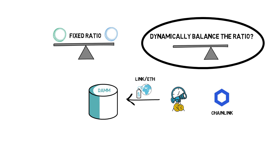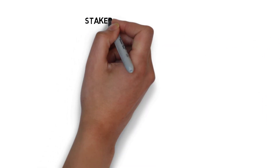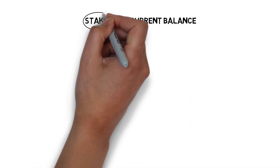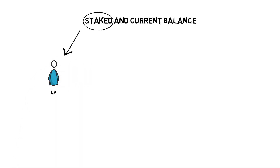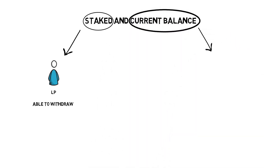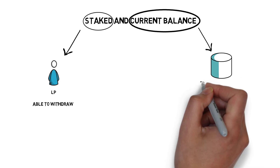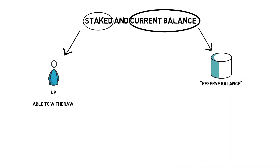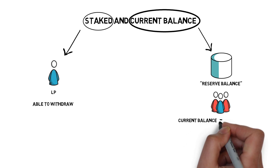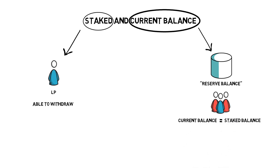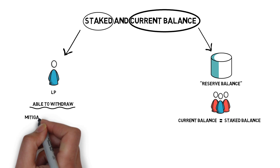Let's introduce a concept of the staked and current balance. Staked balance is the balance provided by the liquidity provider — basically the balance that the LP should be allowed to withdraw when they decide to finish providing liquidity. Current balance is the balance of the tokens in the pool, also sometimes called the reserve balance. Bancor V2 DAMMs always incentivize market participants to bring the current balance as close to the staked balance as possible, making sure that LPs can withdraw the number of tokens they provided to the pool and mitigate impermanent loss.